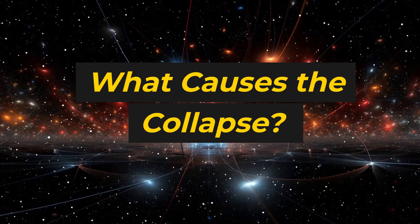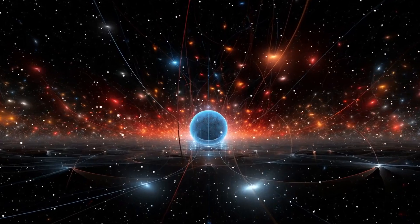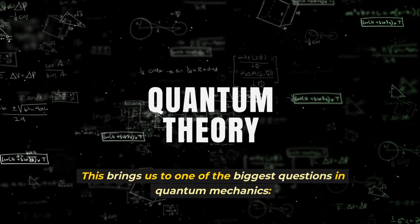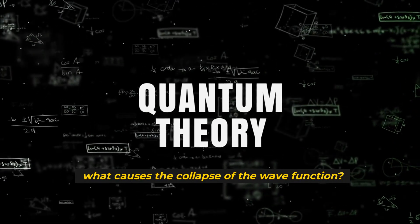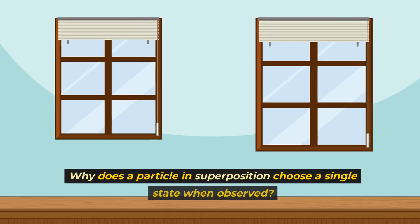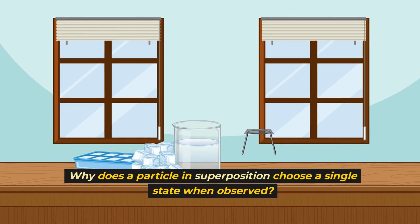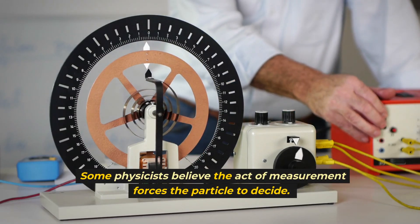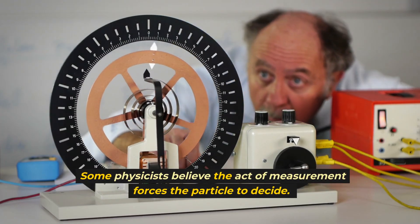What causes the collapse? This brings us to one of the biggest questions in quantum mechanics. What causes the collapse of the wave function? Why does a particle in superposition choose a single state when observed? Some physicists believe the act of measurement forces the particle to decide.